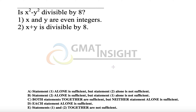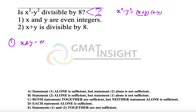Before proceeding, always try to solve the question yourself first, so you can check where you went wrong. The question asks: is x² - y² divisible by 8? The answer must be yes or no. We can use the algebraic property that x² - y² = (x+y)(x-y), and we need to find if their product is divisible by 8. The first statement is: x and y are even integers. Applying Rule 3, let's substitute: if x=4, y=2, then 4² - 2² = 12, which is not divisible by 8.